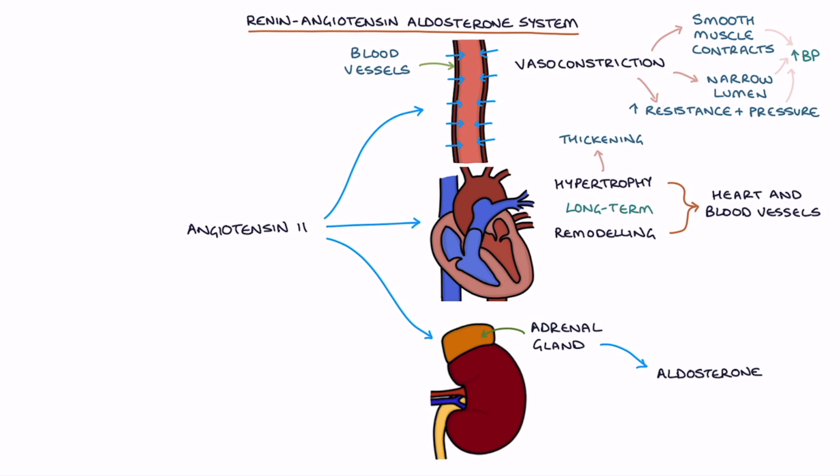Long term, angiotensin 2 stimulates hypertrophy or thickening of the heart muscle or myocardium and the vascular smooth muscle, causing cardiac remodeling and thickening of the blood vessel walls.